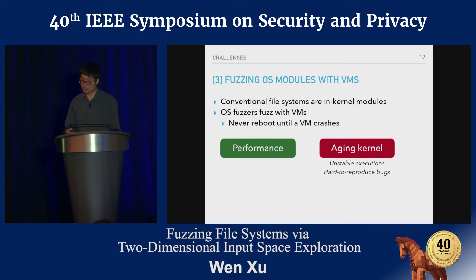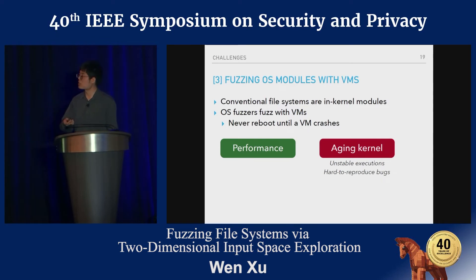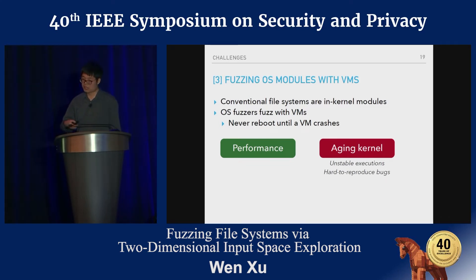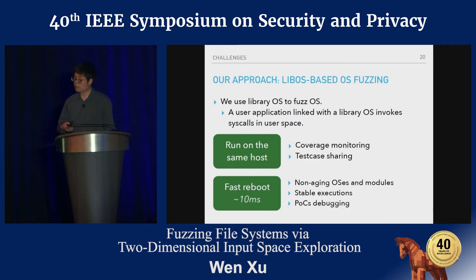The third challenge of file system fuzzing is that existing OS fuzzers all fuzz the target OS inside a virtual machine and never reboot, because rebooting or reverting a snapshot takes a lot of time. However, this causes a serious side effect: they keep using an aging kernel unless it crashes, leading to unstable kernel execution. Bugs are the result of hundreds of thousands of system calls invoked in the past, making bugs very hard to reproduce.